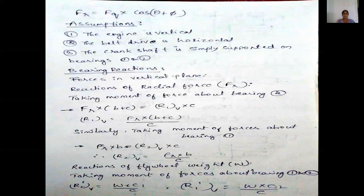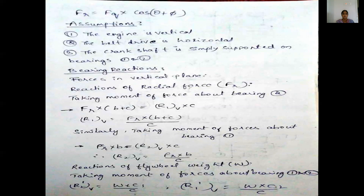Assumptions: the engine is vertical, the belt drive is horizontal, and the crankshaft is simply supported on bearings 1 and 2. Bearing reactions depend upon the forces in the vertical plane — reactions of radial force Fr and thrust force. Radial force is in the perpendicular direction; thrust is parallel to the axis. Taking moment of force about bearing 2: Fr into (B plus C) equal to R1V into C.